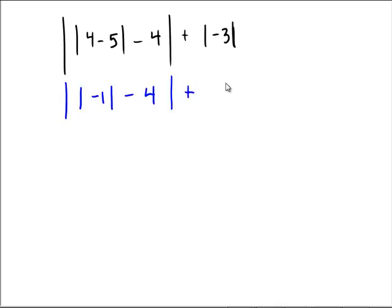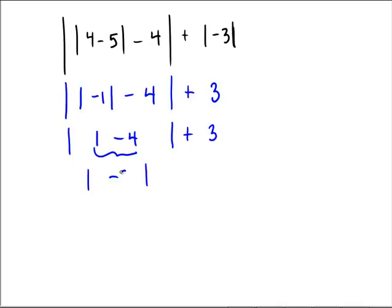Over here we have an absolute value of negative three. How many units away is negative three from the origin? That's three units away, so the absolute value of negative three is three. Now inside the big absolute value, the absolute value of negative one is positive one, minus four, plus three on the outside. One minus four is negative three, so we have the absolute value of negative three plus three. The absolute value of negative three is positive three, so we just have three plus three, and our final answer is six.